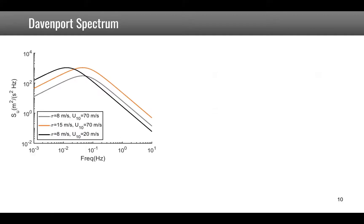Let us look at the influence of different parameters on this spectrum. The gray curve shows the initial spectrum with sigma is 8 meters per second and U10 is 70 meters per second. If we increase the standard deviation to 15 meters per second, the spectrum shifts upward. This is normal because sigma square is the integral of Su, so if sigma square increases, Su increases as well. If we keep the same standard deviation but reduce U10, the main frequencies of the wind are decreasing.